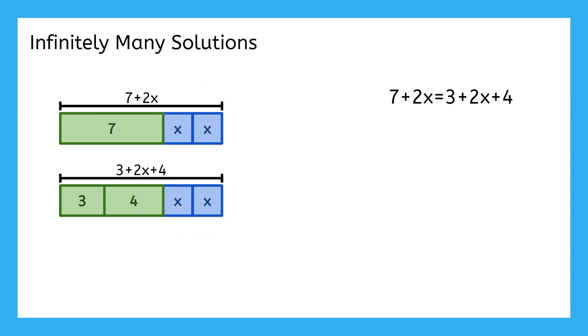So how do you think we can recognize when an equation has infinitely many solutions, like this one, without having to draw out a picture? Well, we can also think about this from the perspective of solving. There are variables on both sides of this equation, so we would want to bring them together by subtracting 2x from both sides. But check this out.